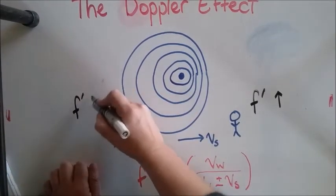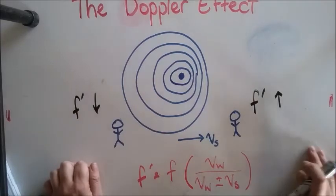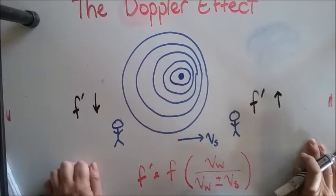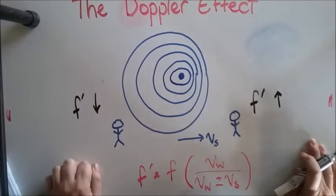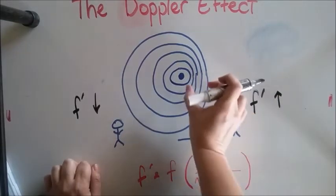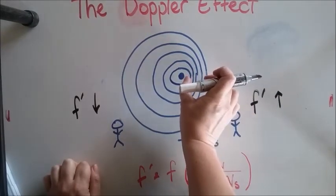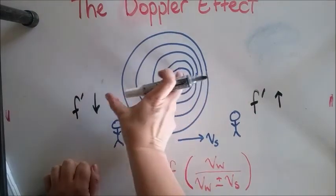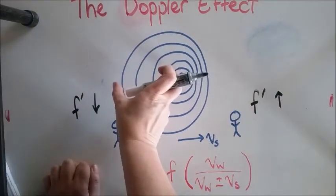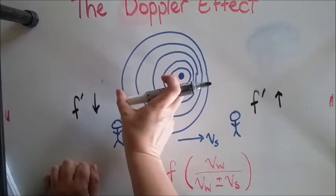And on this side the apparent frequency will be lower. You should be able to rationalize that in your head by thinking about the wavelengths. Here the wavelengths are bunched up and we know that a shorter wavelength means a higher frequency. And here the wavefronts are spread out, and we can see that means there must be a lower frequency.